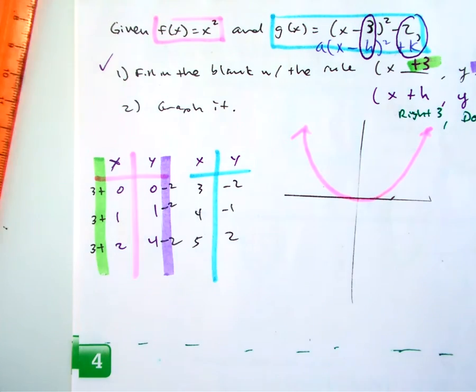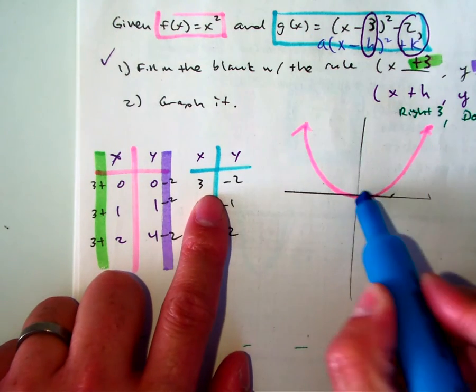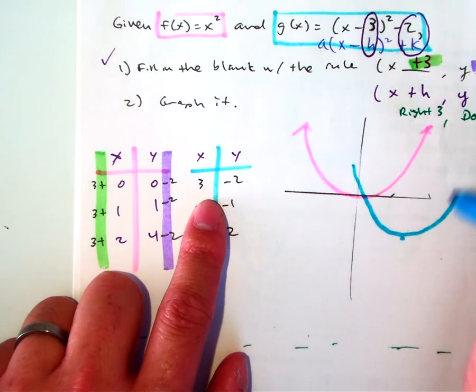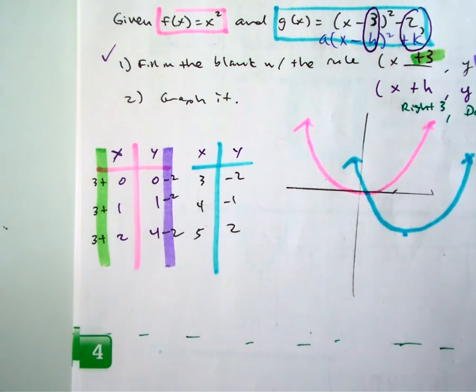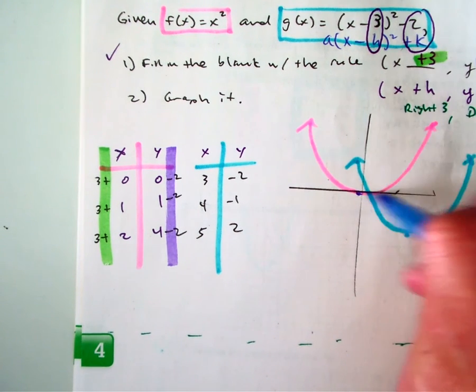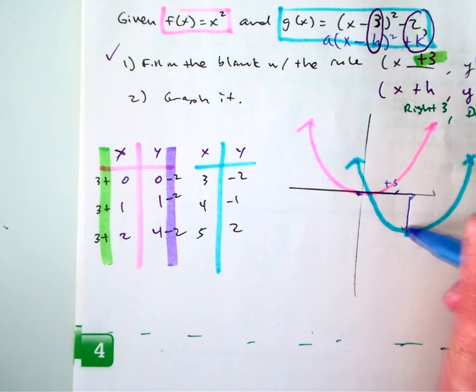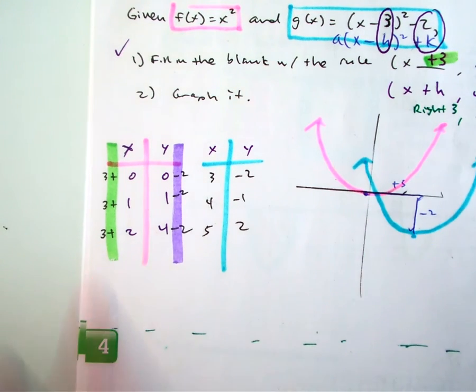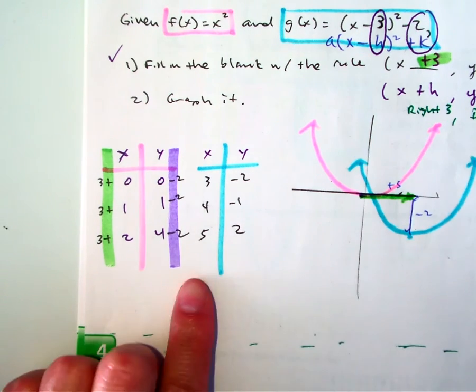So your graph, if you're going right 3 units, down 2, should look something like this. Really, you only need one graph. It's just I'm trying to show you that from the vertex here, you're going right 3 units and then down 2. I should color code that. You're going right 3 and then our purple is down 2.